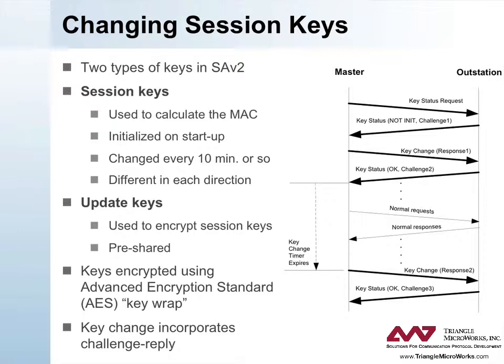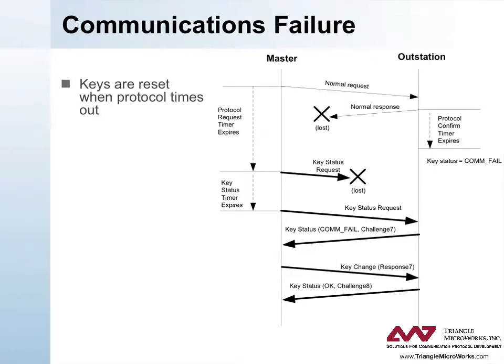The final response from the outstation shows that the keys are okay and provides challenge data for the next exchange if desired. This diagram illustrates how the outstation changes the status of the keys and the master resets the keys after a communication failure occurs.